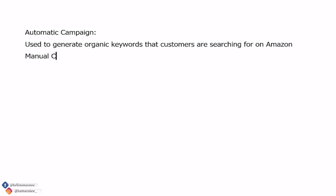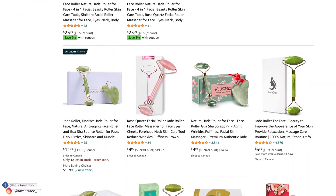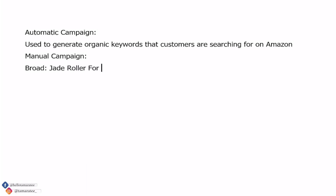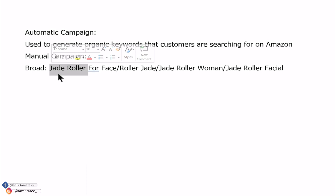Next we have a manual campaign, and manual campaigns come in broad, phrase and exact. A broad manual campaign uses keywords that are loosely matched. Using jade roller as an example, some broad keywords can be jade roller for face, roller jade, jade roller woman, or jade roller facial. If you run just 'jade roller' in a broad manual PPC campaign, all these different loosely matched keywords may appear.